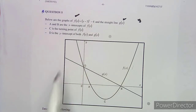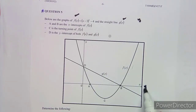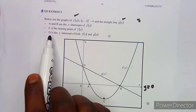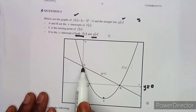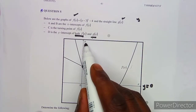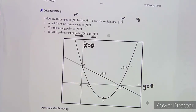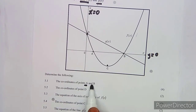A and B are the x-intercepts of f(x). Remember, x-intercepts occur where y is equal to zero, on the x-axis. C is the turning point of f(x). D is the y-intercept of both f(x) and g(x) — a point that lies on the y-axis where x is equal to zero. These two conditions are very important when attempting this type of question.